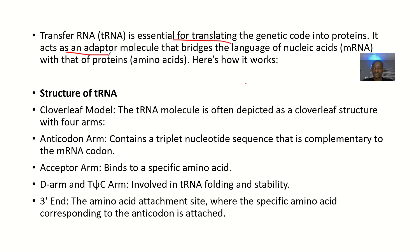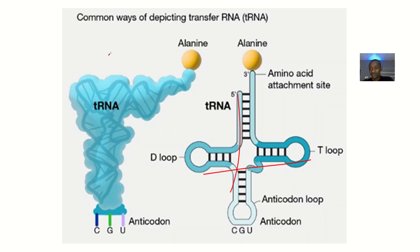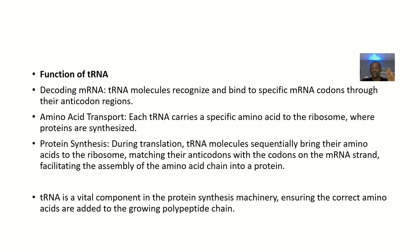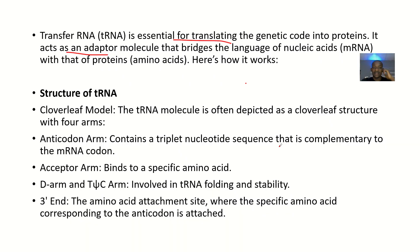What is the structure of tRNA? tRNA has a cloverleaf model. It's shaped like a clover leaf — go search what a clover leaf looks like so you understand this permanently. The tRNA molecule is often depicted as a cloverleaf structure with four arms.